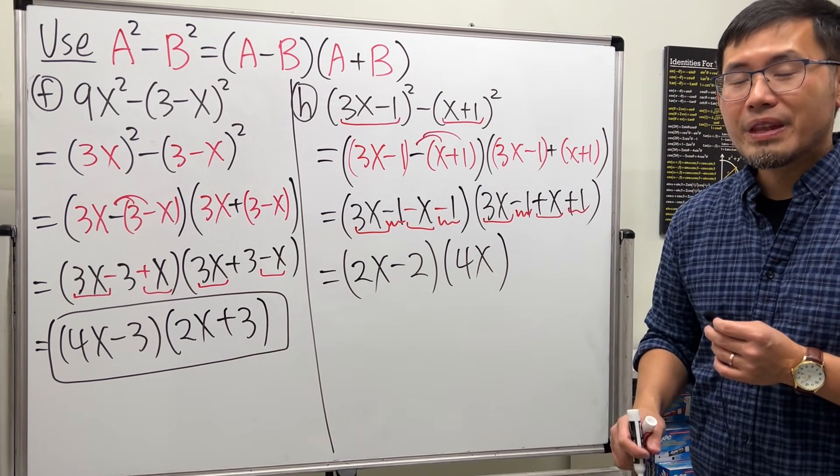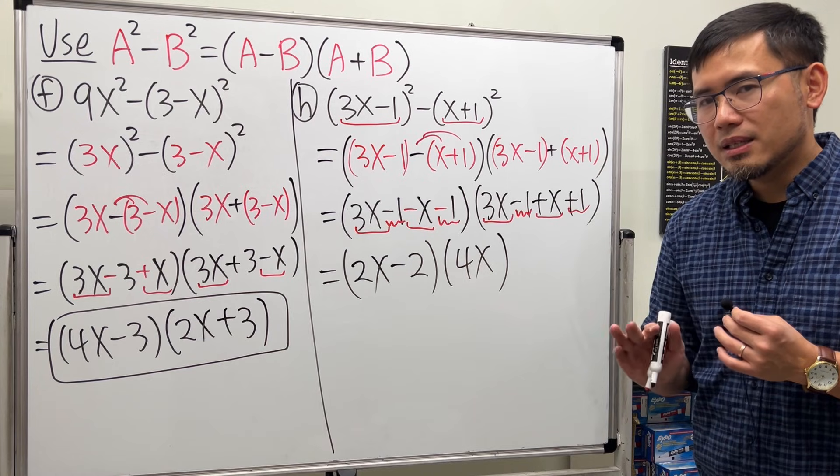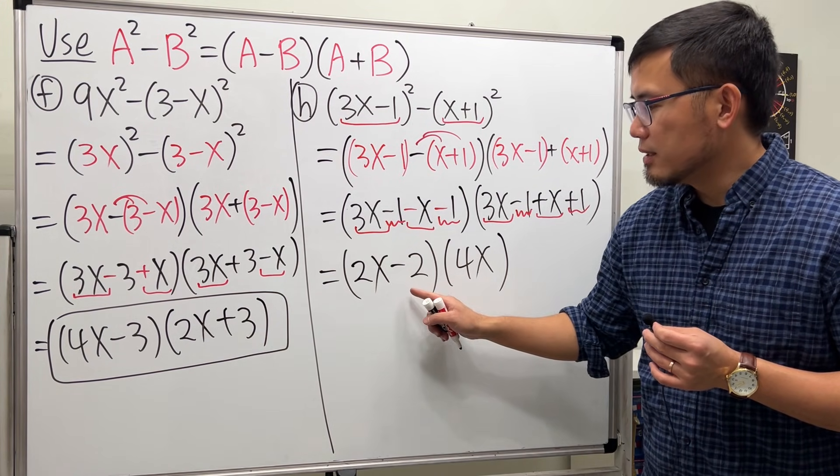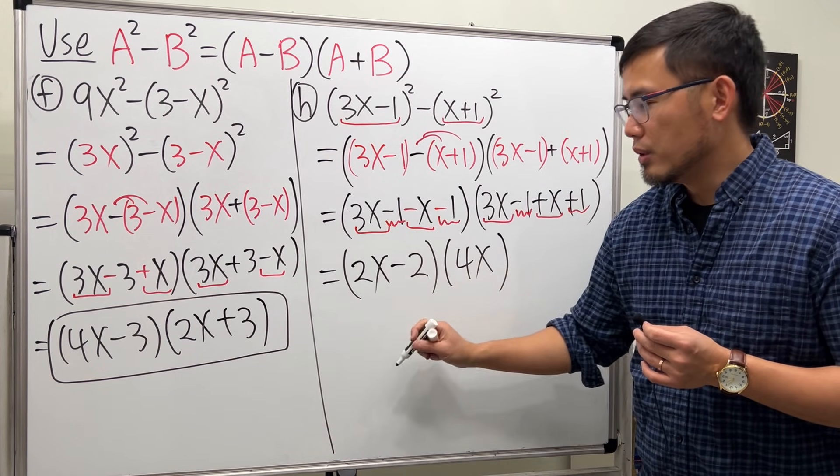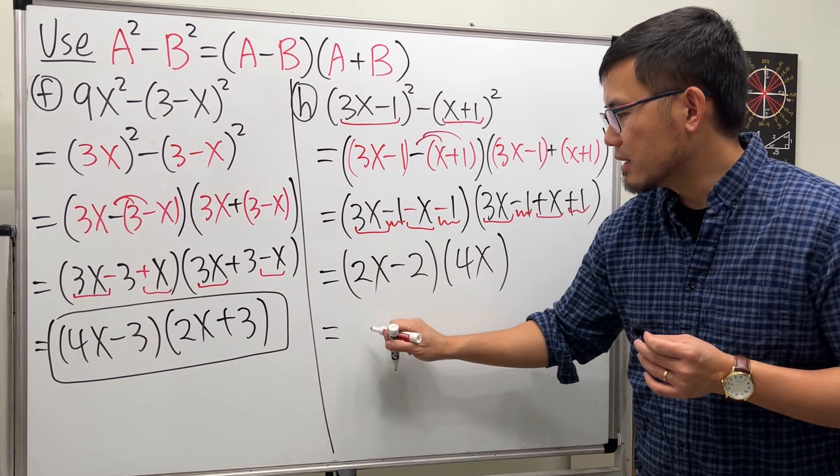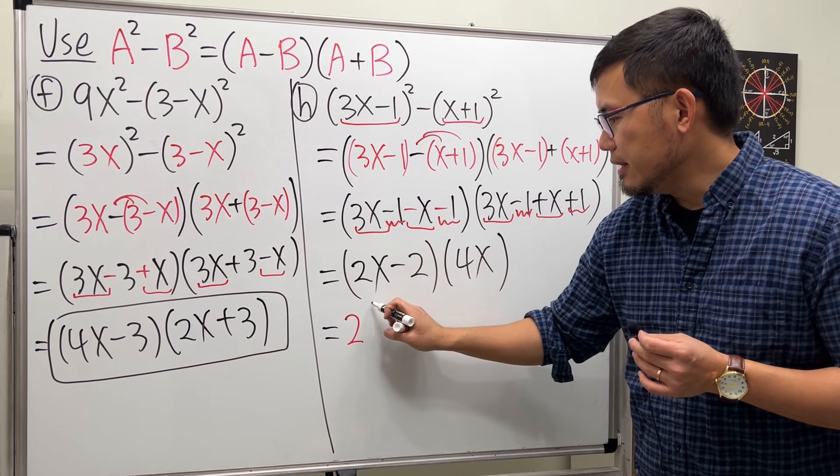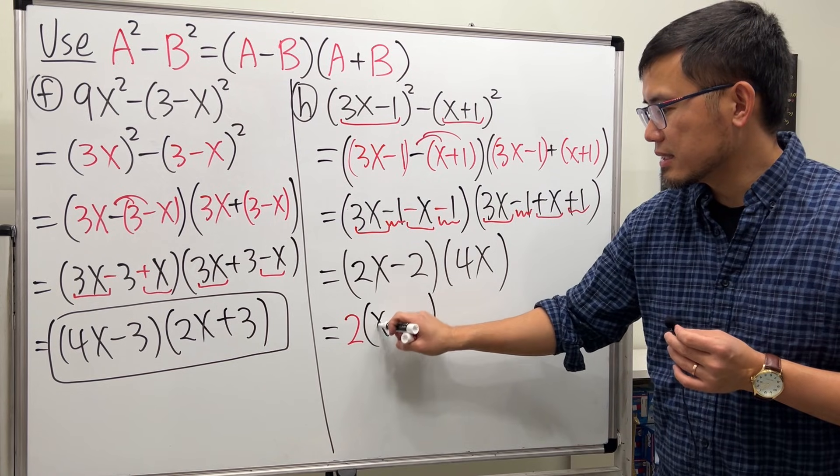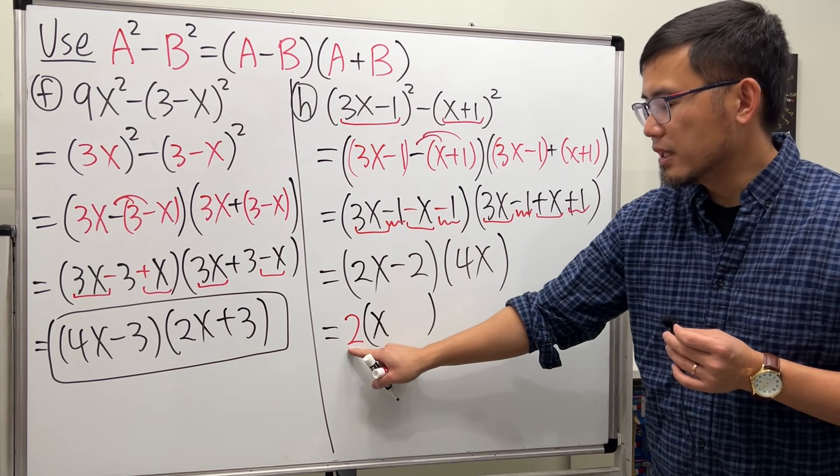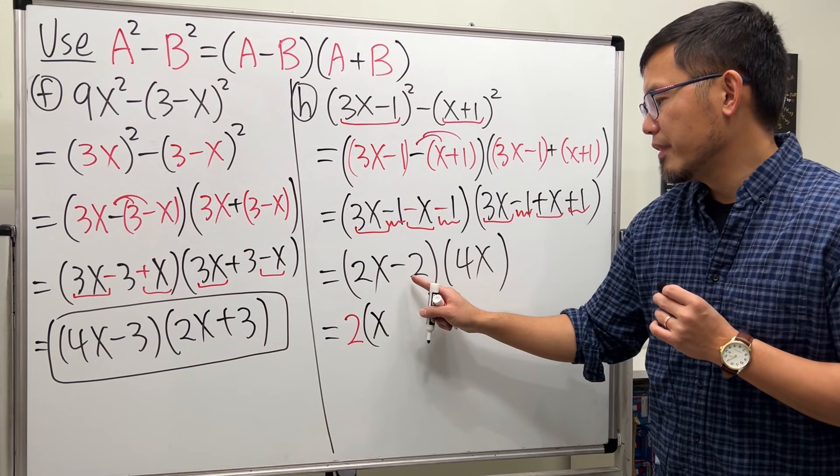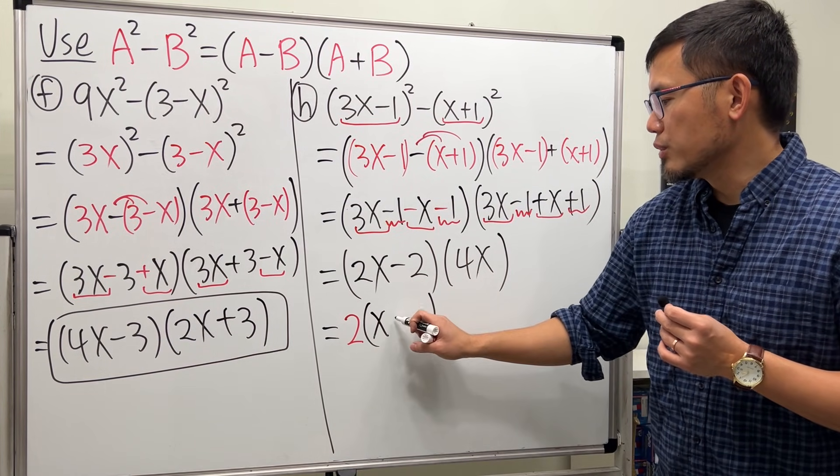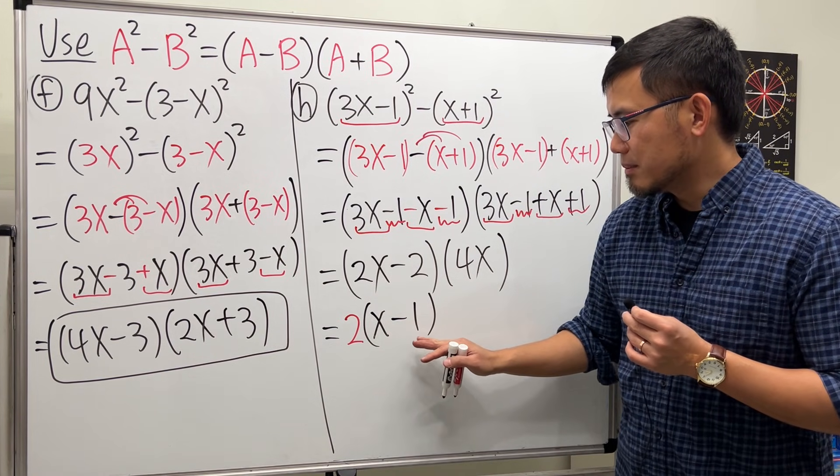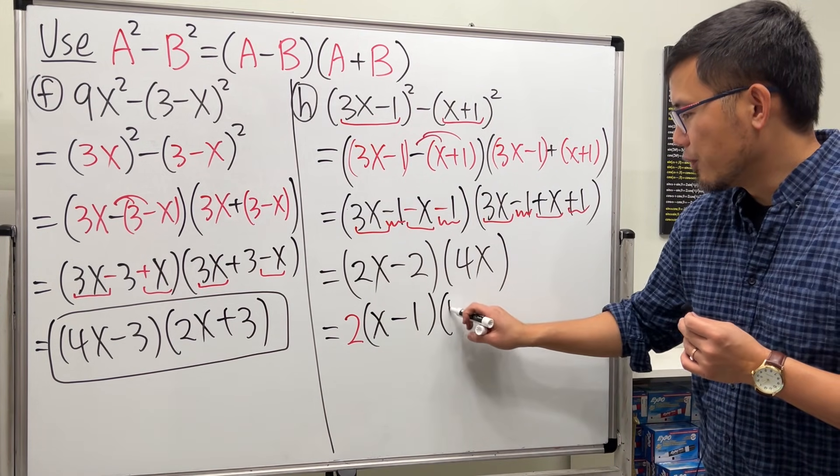It's a little bit strange, right? However, here we are technically not done yet, because if you look at the first part, 2x minus 2, both of them have a factor of 2, so we can factor out the 2. Originally you had the 2x, the 2 is out now, so it's just x. This is the minus 2, we factor the other 2, just think about negative 2 divided by 2, so you get negative 1. So this part is 2 times x minus 1, and then we still have this 4x.